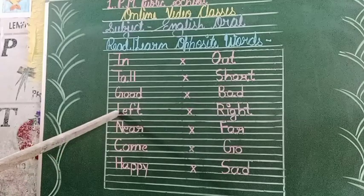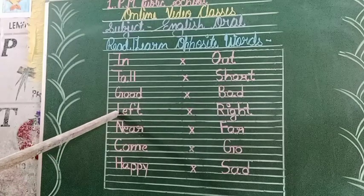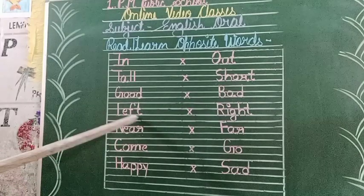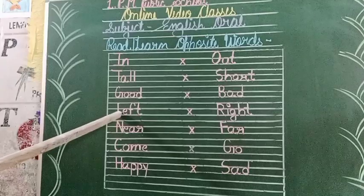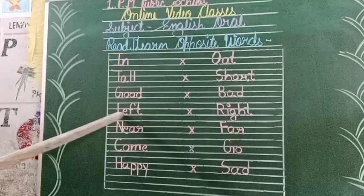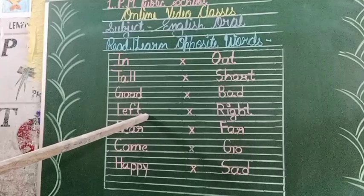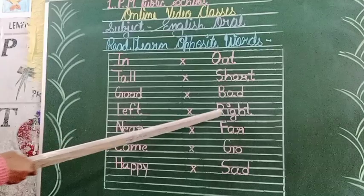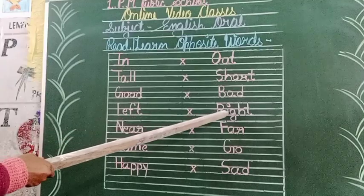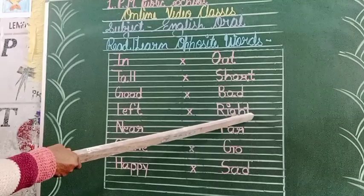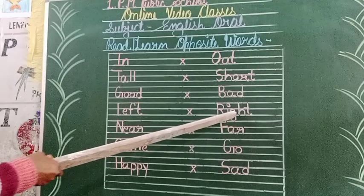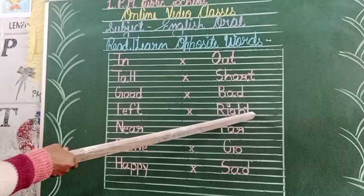Spelling of 'left': L-E-F-T, left. L-E-F-T, left. Spelling of 'right': R-I-G-H-T, right. R-I-G-H-T, right.